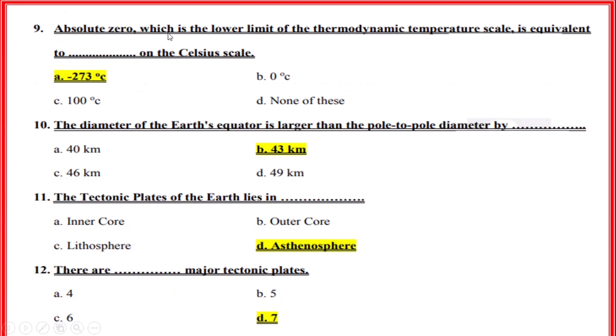Absolute zero, which is the lower limit of the thermodynamic temperature scale, is equivalent to what on the Celsius scale? Correct option: A, minus 273 degrees Celsius.